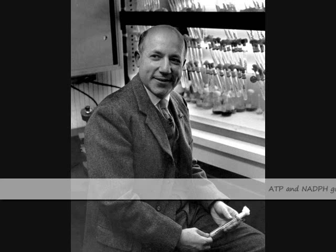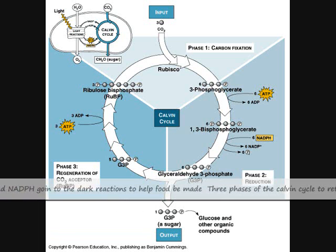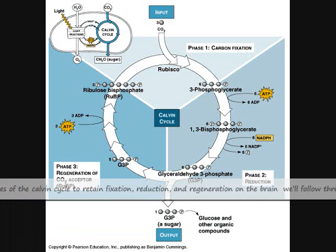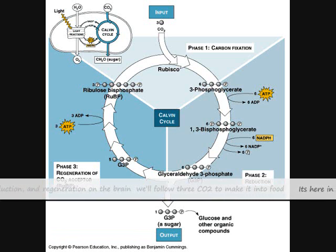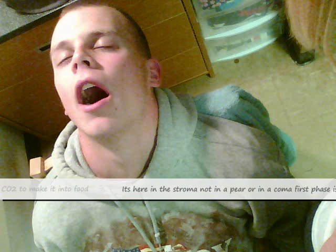ATP and NADPH go into the dark reactions to help food be made. Three phases of the Calvin cycle: fixation, reduction, and regeneration. It follows three CO2 to make it into food. It's here in the stroma.